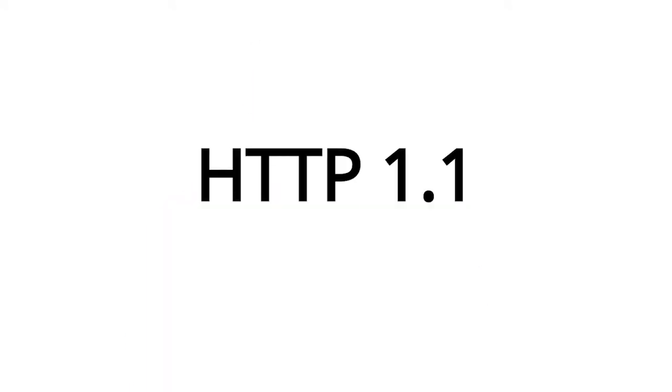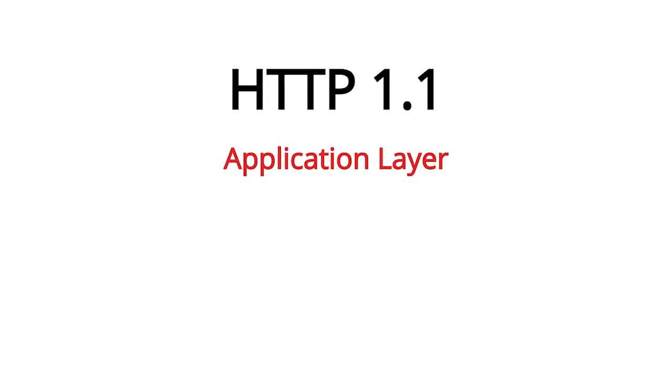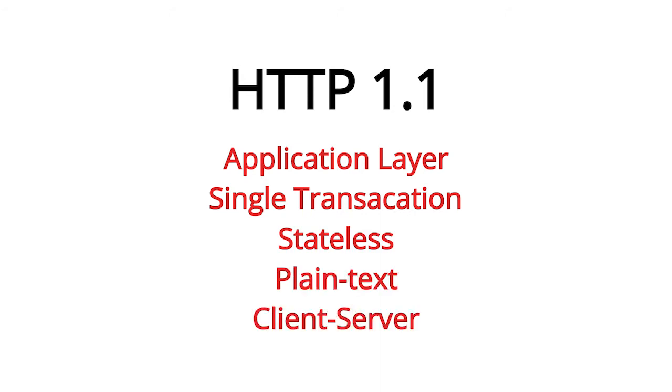Both versions are supported by Wicked. HTTP 1.1 and HTTP 2.0 are different enough that I will cover them separately in two different chapters. We'll start with 1.1 in this chapter. HTTP 1.1 is an application layer, single transaction, stateless, plain text client-server protocol.